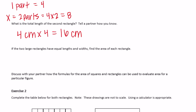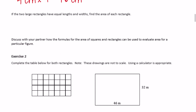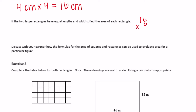If the two large rectangles have equal lengths and widths, find the area of each. The width is 8 and the length is 16, so we want 8 times 16. Calculating: 6 times 8 is 48, carry the 4; 8 times 1 is 8, plus 4 is 12. So the area of each rectangle is 128 centimeters squared.